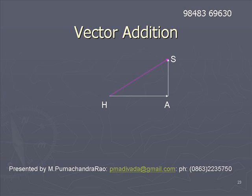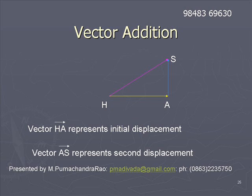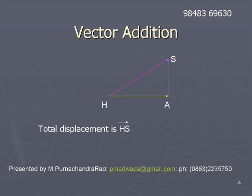Thereafter, along with his friend, if he goes to school, then his displacement is A-S. This is the second part of the journey; the first part is H-A. The total displacement is H-S, because he started at H and finally reached S. His final position is S and initial position is H, so the displacement of the boy after reaching the school is H-S.